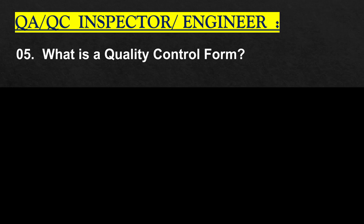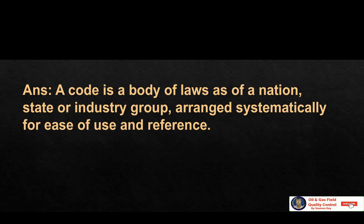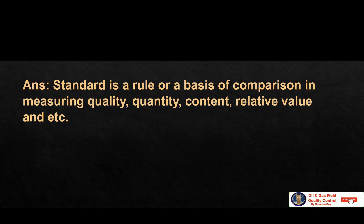What is a quality control form? A quality form is written documentation detailing a specific activity in the ITP — means inspection and test plan — and QC procedure. What is a code? A code is a body of laws, as of a nation, state or industrial group, arranged systematically for ease of use and reference. What is a standard? A standard is a rule or a basis of comparison in measuring quality, quantity, content and relative value.